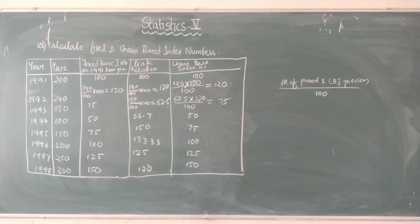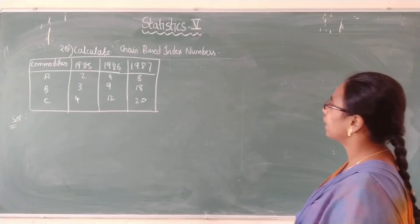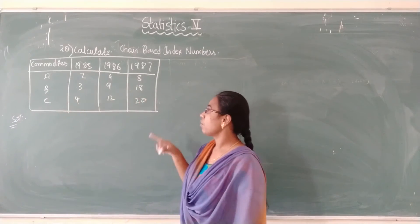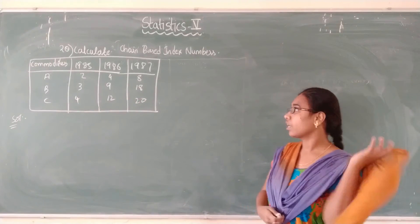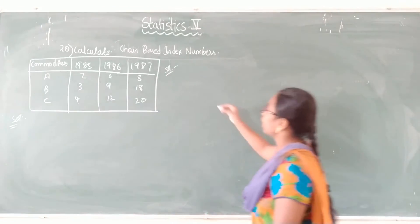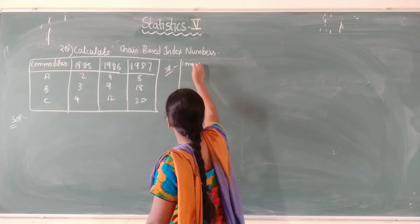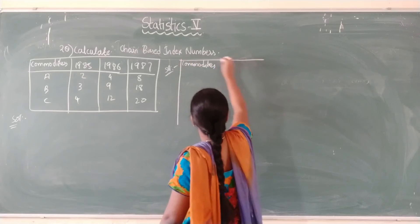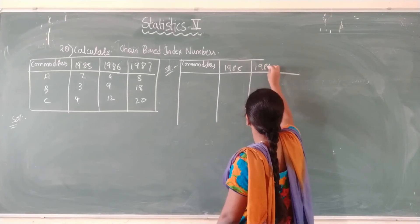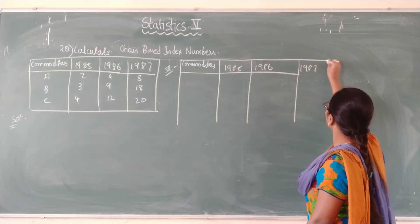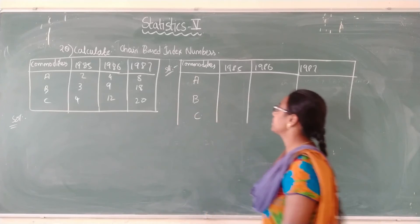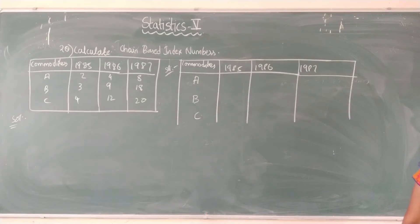Now the second problem involves chain base index numbers with different commodities — A, B, and C — with prices given for different years. First, calculate the link relatives for each commodity. The first linked relative for all commodities in 1985 is always 100.